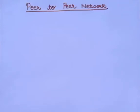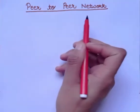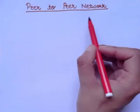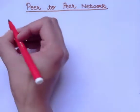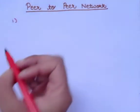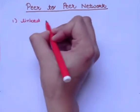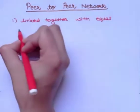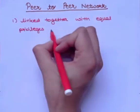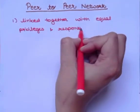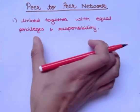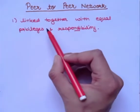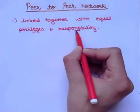Welcome to the channel. In this video we are going to cover peer-to-peer computer network architecture. As discussed in the previous video, there are basically two types of computer network architecture. In peer-to-peer, all computers are linked together with equal privileges and responsibilities. Every computer system connected via the internet has equal responsibilities and equal privileges for processing the data.